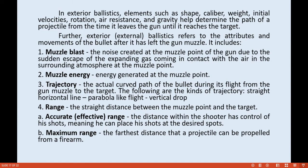Trajectory is the actual curved path of the bullet during its flight from the gun muzzle to the target. The kinds of trajectory include: straight horizontal line or parabola-like flight, and vertical drop. Range is the straight distance between the muzzle point and the target.